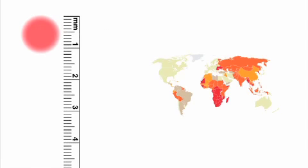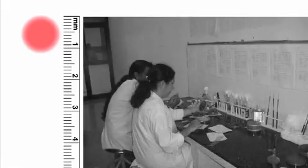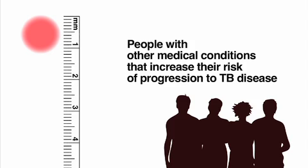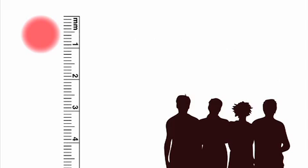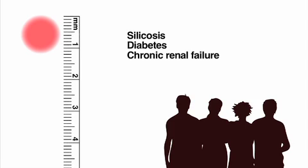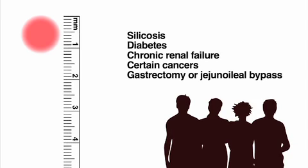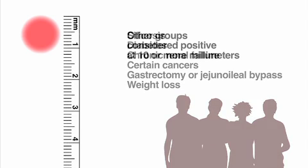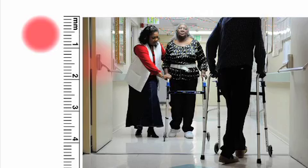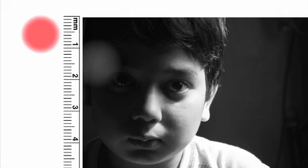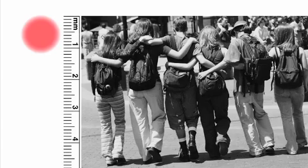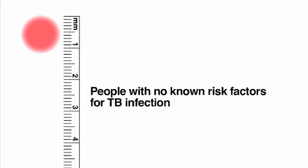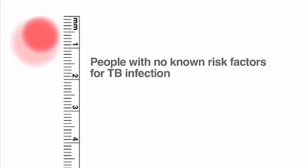Others are considered positive if the induration is 10 or more millimeters. These include recent arrivals from certain regions of the world, injection drug users, people who work in mycobacteriology labs, and people with other medical conditions that increase their risk of progression to TB disease. These medical conditions include silicosis, diabetes, chronic renal failure, certain cancers, gastrectomy or jejunoileal bypass, and weight loss. Other groups considered positive at 10 or more millimeters are residents or employees of high-risk settings such as correctional facilities, hospitals, other health care facilities, and homeless shelters. All children younger than four, and children and adolescents exposed to high-risk adults such as immigrants from TB endemic countries, are also considered positive at 10 millimeters or more. Otherwise, people with no known risk factors for TB infection are considered positive if the induration is 15 or more millimeters.